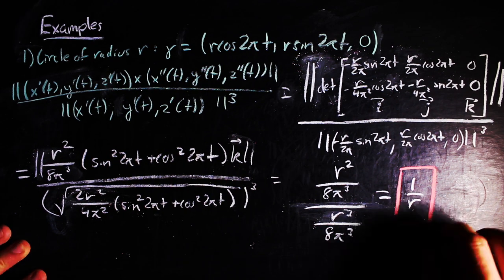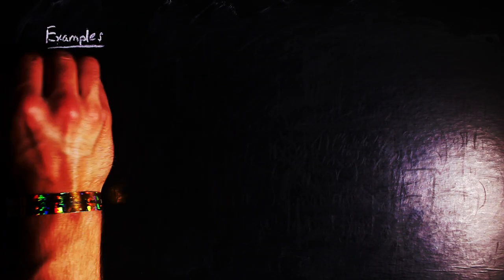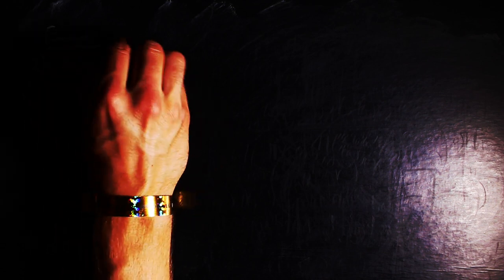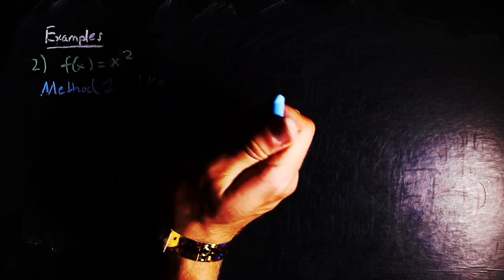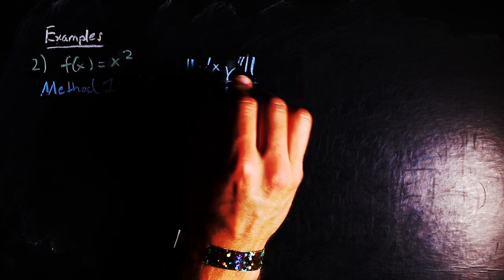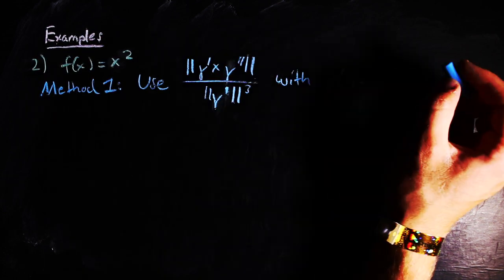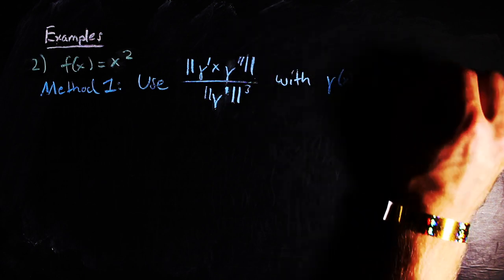Alternatively, if we wanted to get the curvature of the graph of the function f of x equals x squared, we could just use the cross product formula as well by using the spatial parameterization t, t squared, and zero, which just takes the plane that the graph is in and shoves it into three space so that you can use the cross product formula.